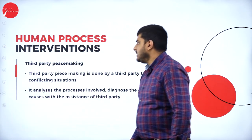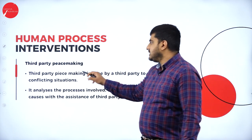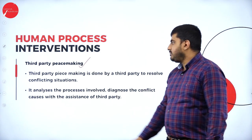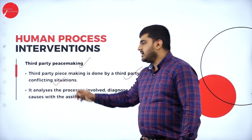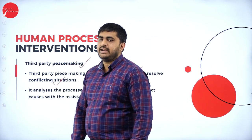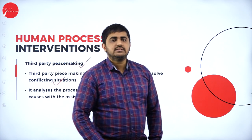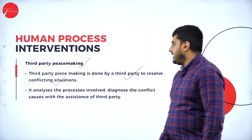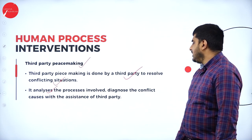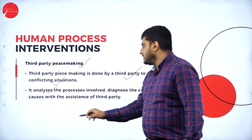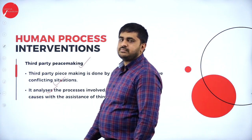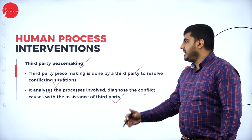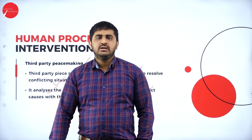Third party peacekeeping is done by a third party to resolve conflicting situations. An external person comes in, understands the situation, and rectifies it by interfering. It analyzes the processes involved and diagnoses the conflict causes with the assistance of a third party — an expert such as a human resource manager or researcher — who interferes and brings peace inside the organization. This is human process intervention.